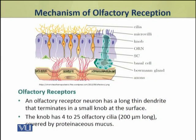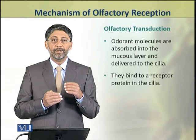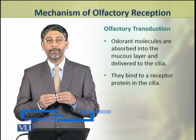The olfactory receptor neuron has a long thin dendrite that terminates in a small knob-like structure. At its surface, the knob has about 4 to 25 olfactory cilia at its tip. These cilia are about 200 micrometers long and are covered by a proteinaceous mucus. Now we shall discuss the mechanism of olfactory transduction.